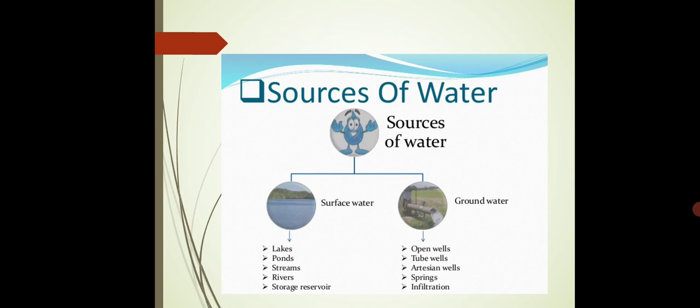Now what are the sources of water? Where do you get water? The main two sources of water are surface water and ground water. So the types of water are here.